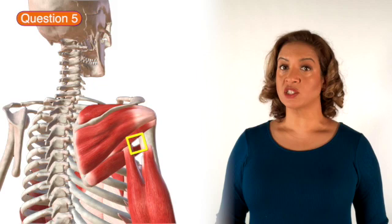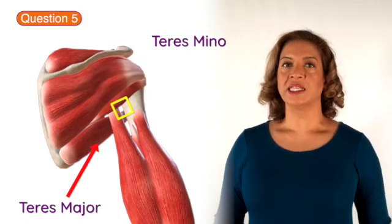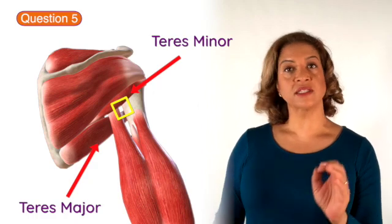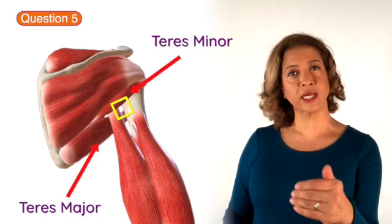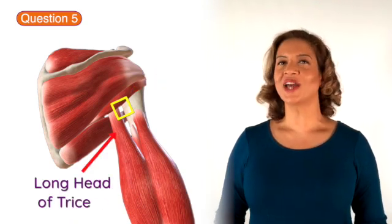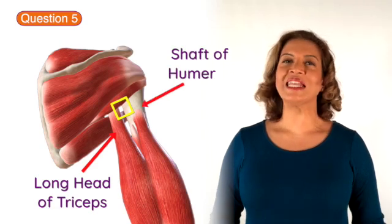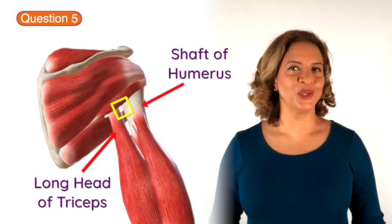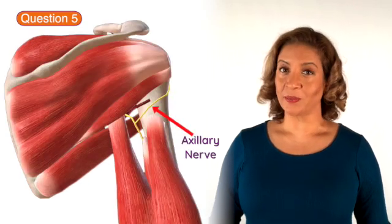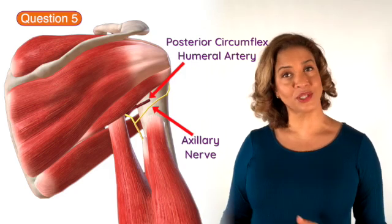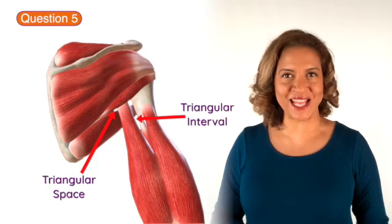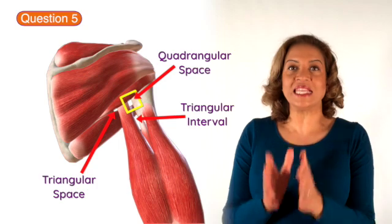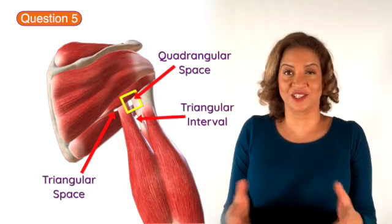The quadrangular space is found in the posterior region of the shoulder girdle. It is formed by the teres major inferiorly, the teres minor superiorly, and the subscapularis also forms the upper part of the quadrangular space as it is situated directly in front of teres minor. The long head of triceps forms the medial border and the lateral border is formed by the shaft of the humerus. The axillary nerve and the posterior circumflex humeral artery pass through this space. The triangular interval and triangular space are very closely related to the quadrangular space and it is easy to get them mixed up, which is why it's such a common exam question.